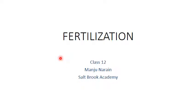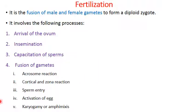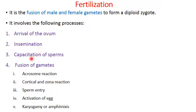The next part of this chapter is fertilization. Fertilization is the fusion of male and female gametes to form a diploid zygote, where the sperm fuses with the egg or ovum. This process involves the following stages: first, arrival of the ovum; second, insemination; third, capacitation of the sperms; fourth, fusion of the gametes — which includes sub-phases like acrosome reaction, cortical and zona reaction, sperm entry, activation of the egg, and karyogamy or amphimixis.